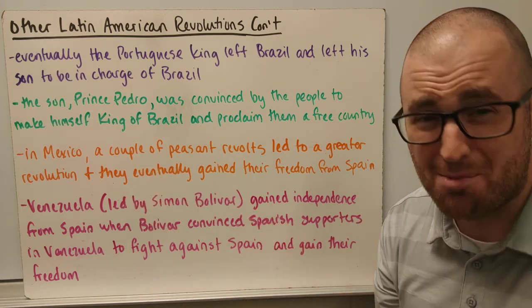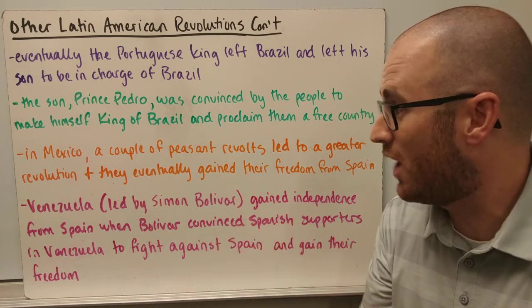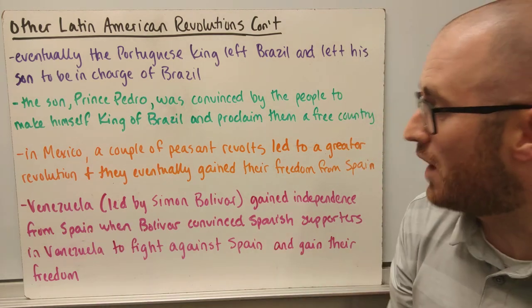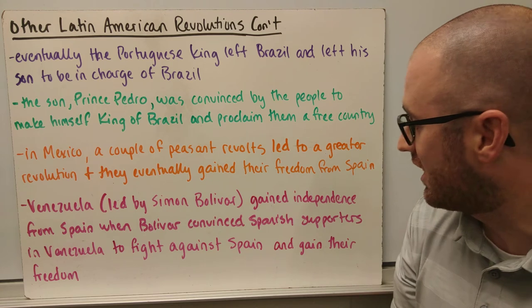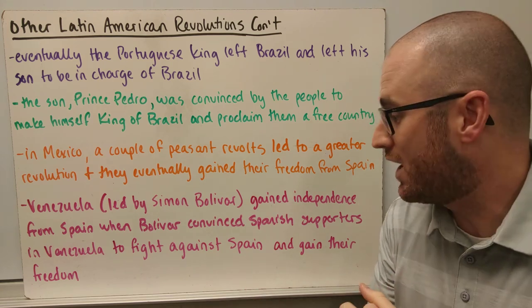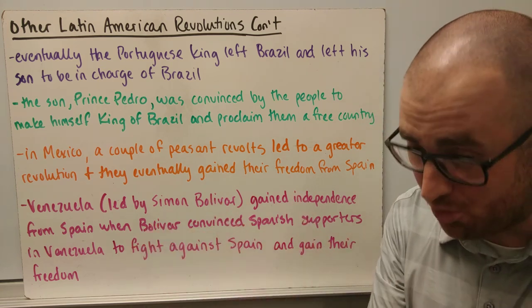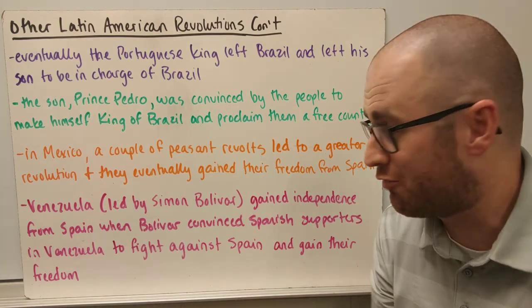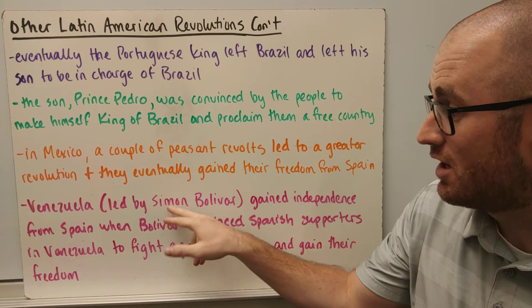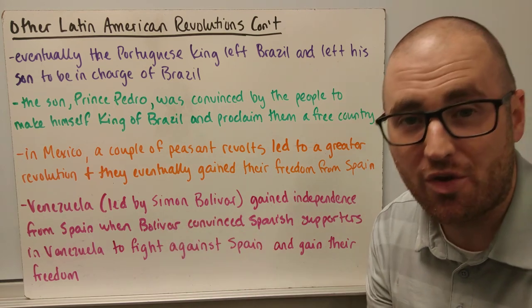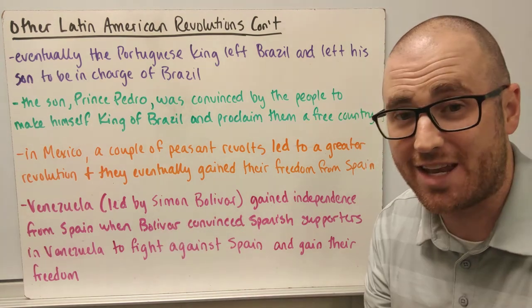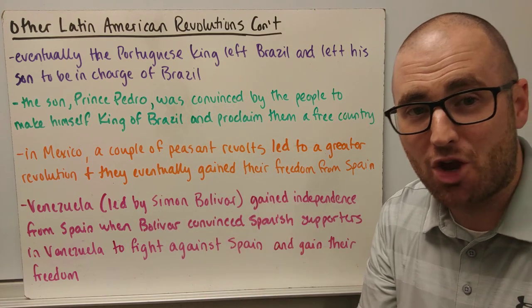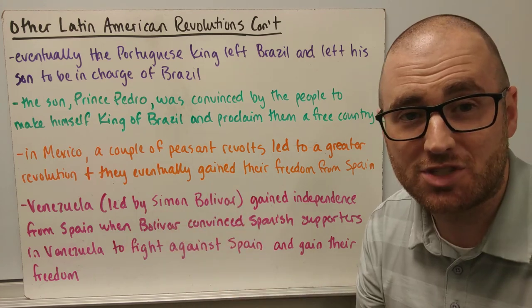In Mexico, a couple of peasant revolts paved the way for a larger revolution that eventually gained freedom from Spain. In Venezuela, led by Bolívar, independence from Spain was achieved when he convinced Spanish supporters in Venezuela to fight against Spain. Bolívar helped many other areas gain their freedom as well, and across South America and Latin America, nation-states began to form into the countries we see today.